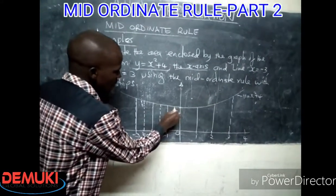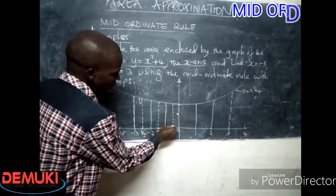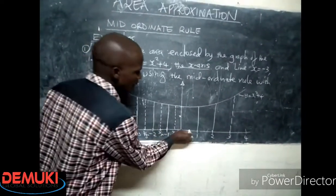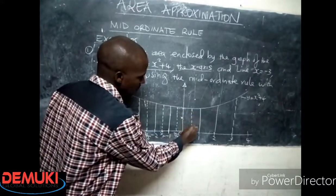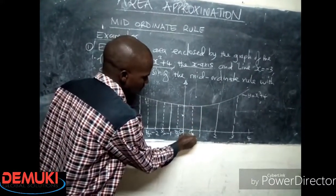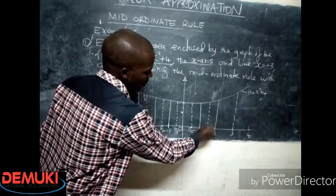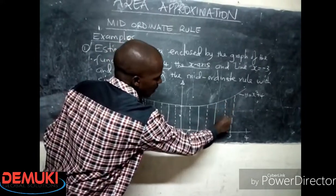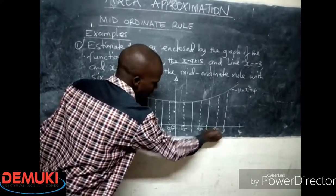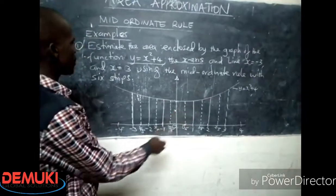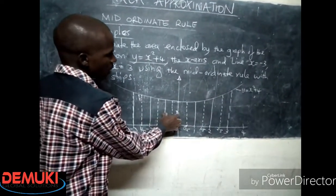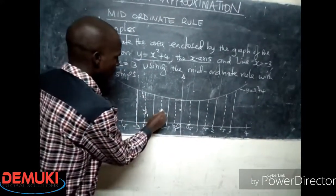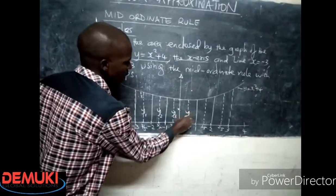Negative 1.5, now these ordinates correspond to negative 0.5. Now this one here is positive 0.5, then I'll have another ordinate here at 1.5, and then another ordinate here at 2.5. Are there six strips? Yes, one, two, three, four, five, six.